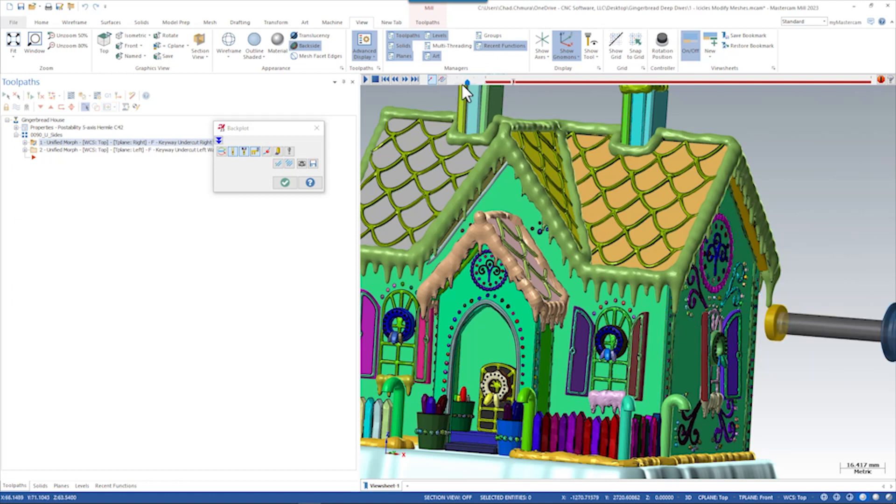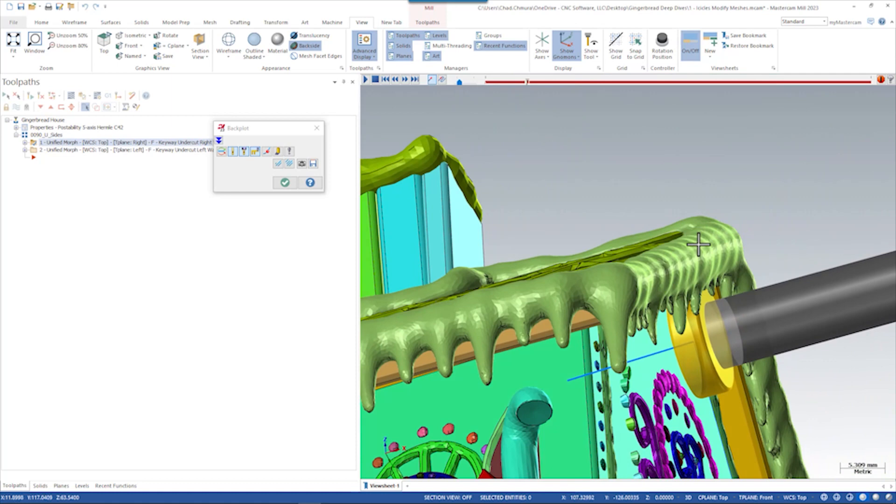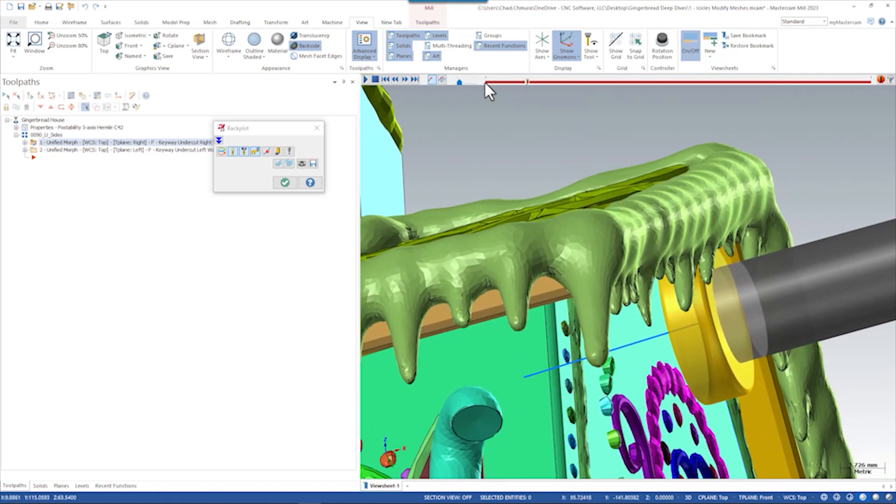It's a pretty simple toolpath, basically just running up underneath the icicles with a slotting saw. As it runs down here, you can see it's safe on a lot of these icicles but we do kind of bump through some of them, especially the last one.